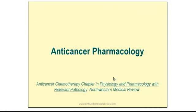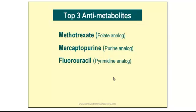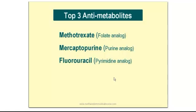Anti-Cancer Chemotherapy. The top 3 anti-metabolites are Methotrexate, which is a folic acid analog; Mercaptopurine, which is a purine analog; and Fluorouracil, which is a pyrimidine analog. There are a few more anti-metabolites, but you must know these 3 for sure before the exam.